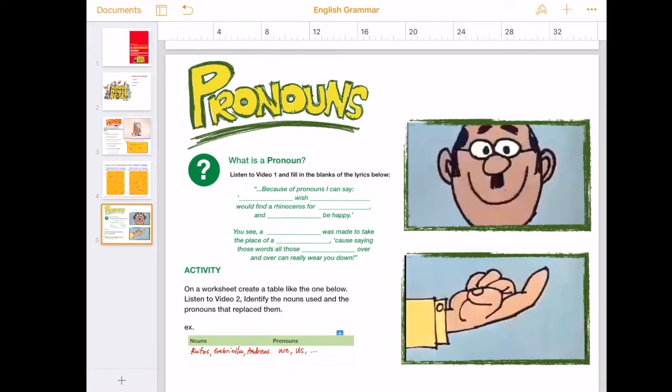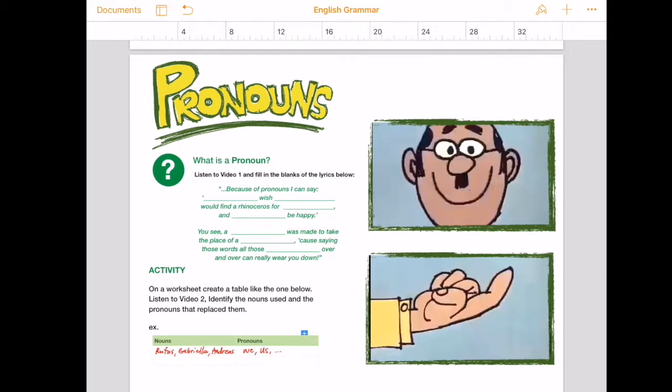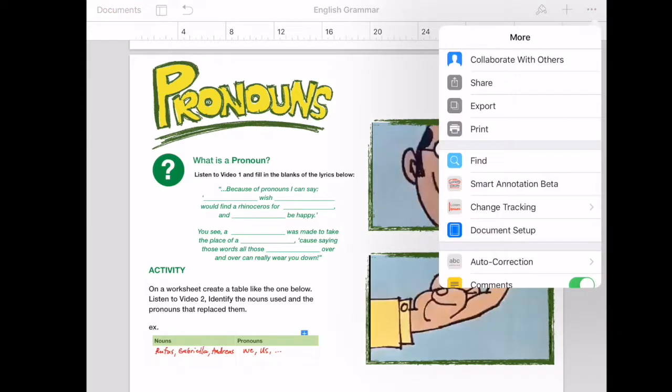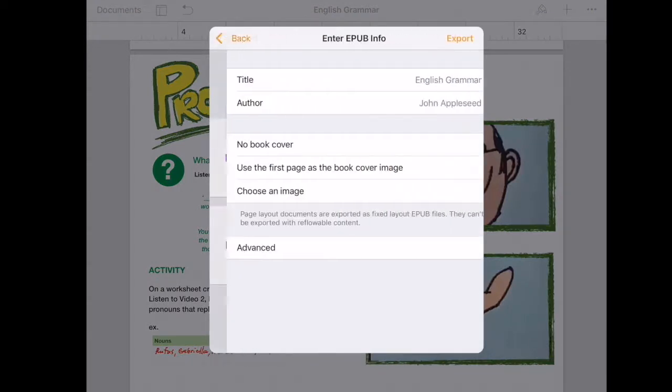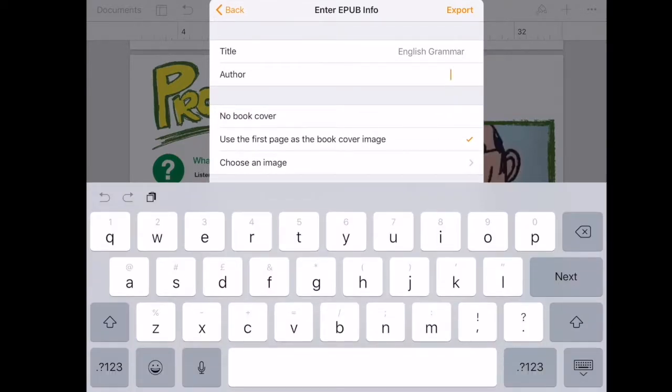Now let's export. Go to this three dots here upper right side and export our file. We want to export this as an EPUB. Change the author. Let's just say Miss Joyce.